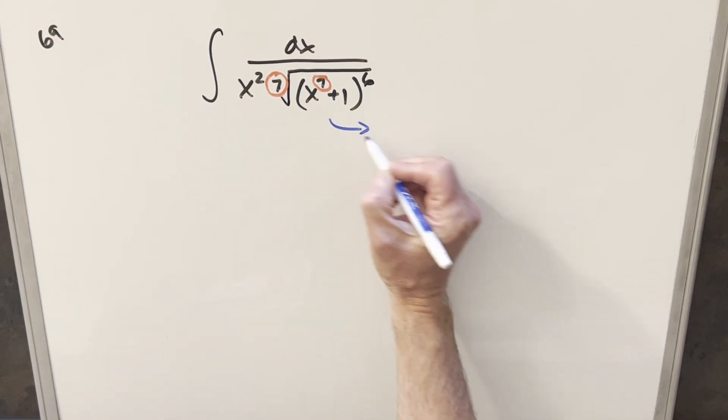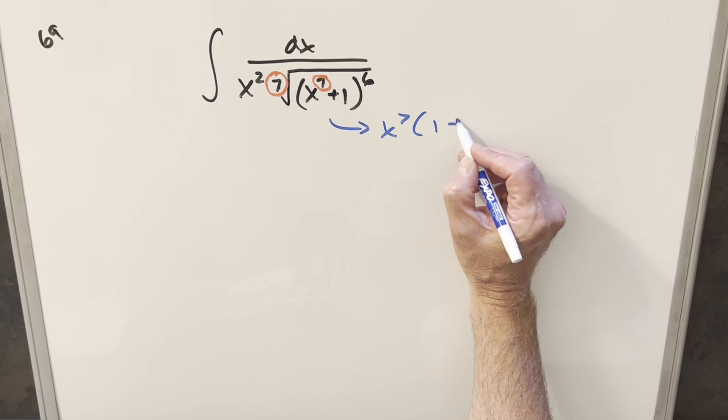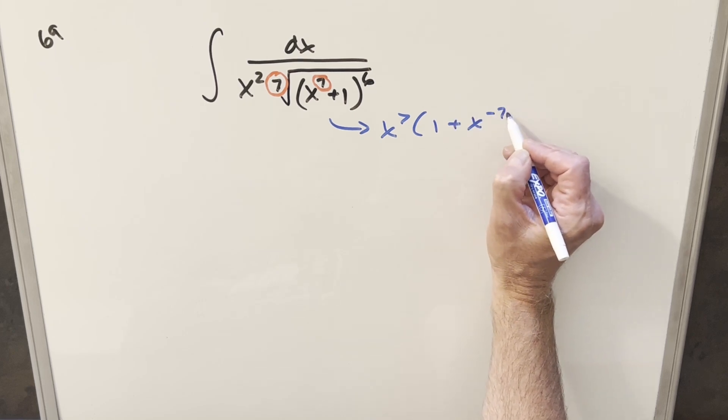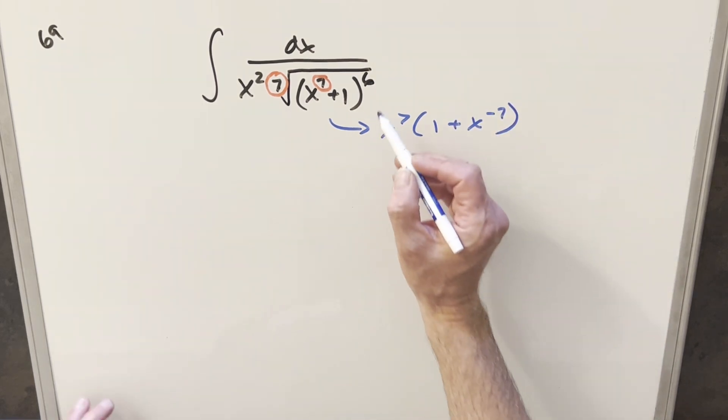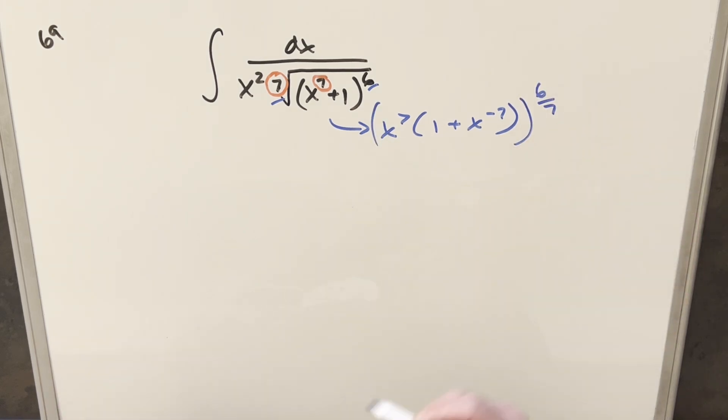To try to make use of that, let's factor this expression here. I can factor in x to the 7th out and write it as 1 plus x to the minus 7th. And then grouping the 6th power with the 7th root, we can write all of this as to the 6th over 7th power.